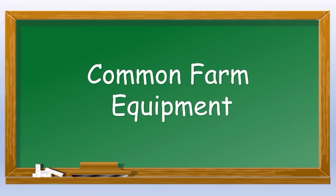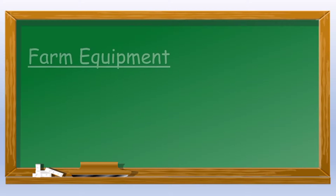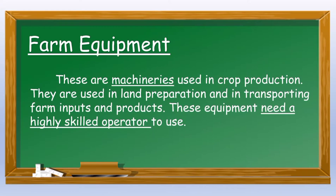Common Farm Equipment. Farm equipment are machineries used in crop production. They are used in land preparation and in transporting farm inputs and products. These equipment need a highly skilled operator to use.